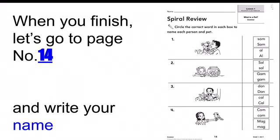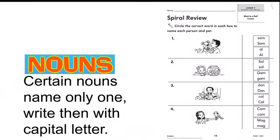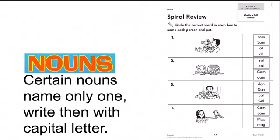I'm going to give you some time so that you write your name. Meanwhile, I'm going to read the instructions. Spiral review. Circle the correct words on each box to name each person and pet. And just for you to remember. Nouns. Certain nouns name only one. Write them with capital letter.